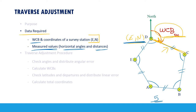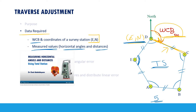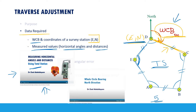These values are measured using a total station. I have explained how to measure horizontal angles and distances using a total station in a separate video called 'Measuring Horizontal Angles and Distances Using Total Station.' Also, if the term whole circle bearing is new to you, I have a separate video called 'Whole Circle Bearing and North Direction' which explains those calculations in detail.